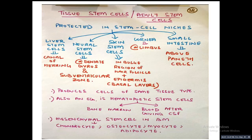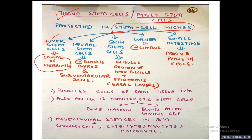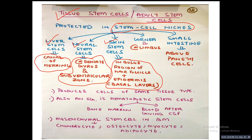Now we speak about tissue stem cells or adult stem cells — those present in adults. They are protected in stem cell niches: specific locations in different organs that harbor stem cells. For example, liver stem cells are in the canal of Herring; neural stem cells are at the dentate gyrus and subventricular zone of the brain; skin stem cells are in the bulge region of hair follicles and basal layers of the epidermis; corneal stem cells are at the limbus; and small intestinal stem cells are above the Paneth cells.